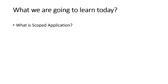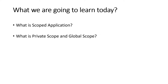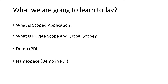Today we'll learn about what is a scoped application, what is private scope, and what is global scope. This will help us build the custom application, and we'll see why we choose private scope. Then I'll jump into my PDI and show you private scope and global scope in a ServiceNow instance, followed by the important concept of namespace.